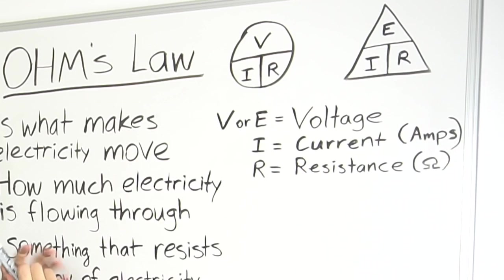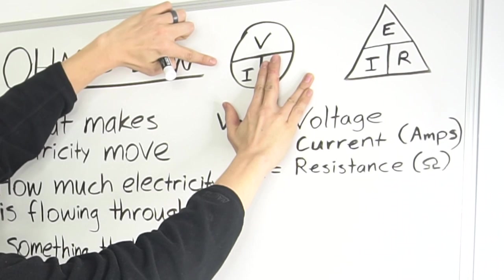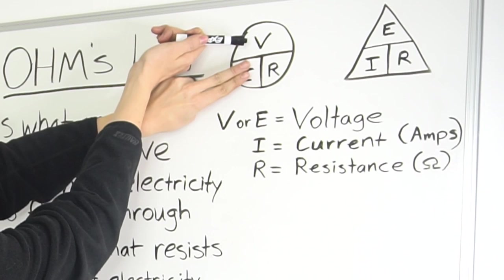Now, if you don't have the resistance, you can cover up the resistance. And since they're on top of each other like that, that's division. So volts divided by amperage would get you the resistance. Now if you're looking for the amps, you can cover that up. And as you can see, volts divided by resistance would get you your amperage. So let's do a couple examples of that.